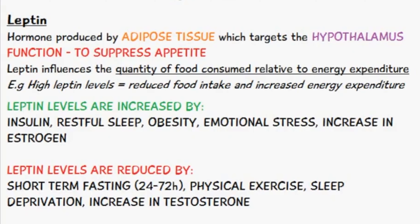First we'll talk about leptin, which is produced by the adipose tissue and it targets the hypothalamus. Its main function is to suppress appetite and hunger, and it influences the quantity of food consumed relative to the energy which we use.